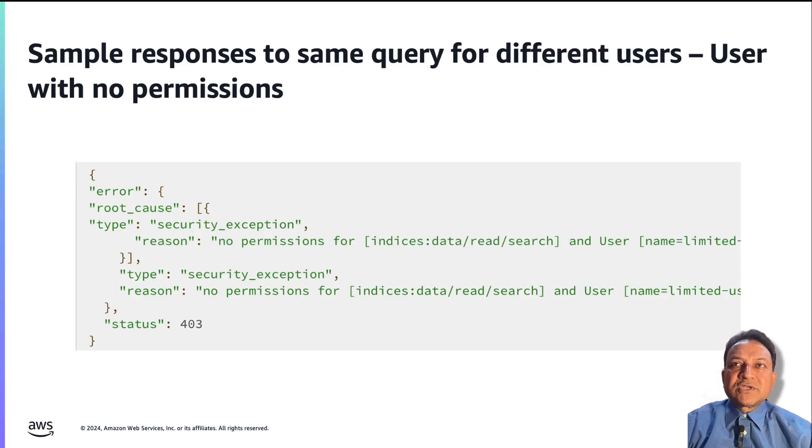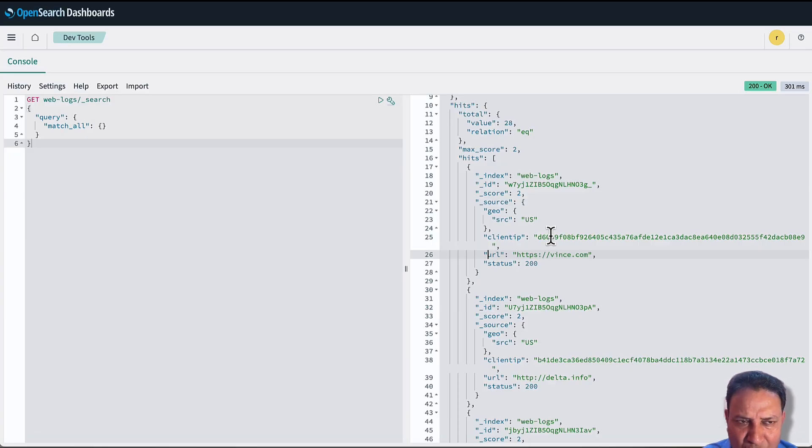Finally, we see the response to the same query for a user with no permissions — in this case we see an exception, because that user has no permissions assigned. That brings us to the end of how to configure fine-grained access control in the Amazon OpenSearch Service. In this video, we discussed fine-grained access control and how it provides the ability to assign permissions to users at the cluster, index, document, and field levels. Thank you for watching.